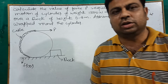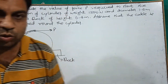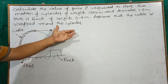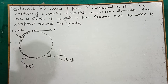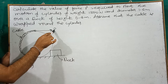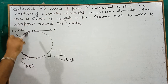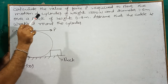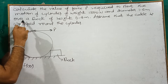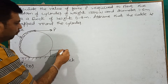We have a concurrent force system, a non-concurrent resultant, a non-concurrent equilibrium problem. The last problem is: calculate the value of force P required to start the motion of a cylinder of weight 1500 Newton and diameter 1.6 meter over a block of height 0.4 meter.